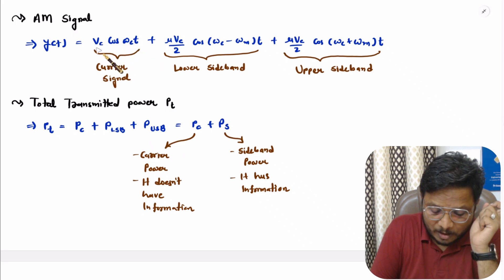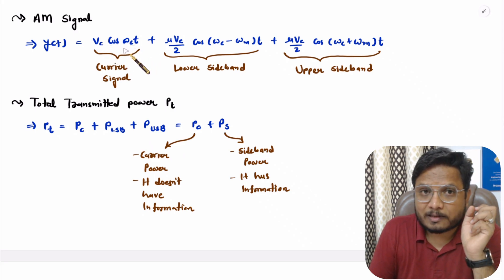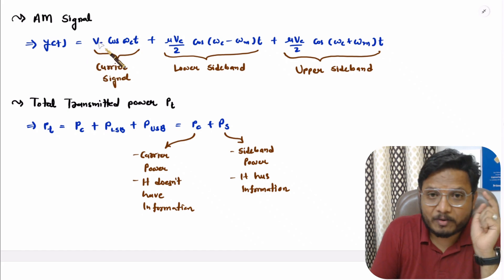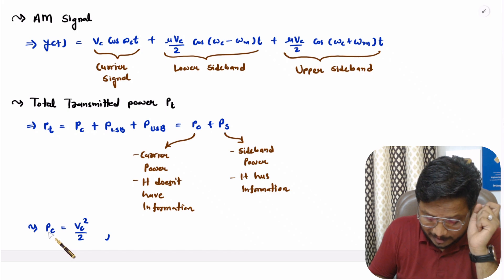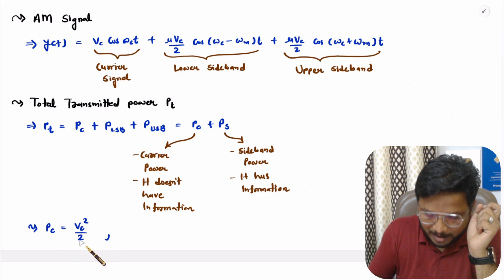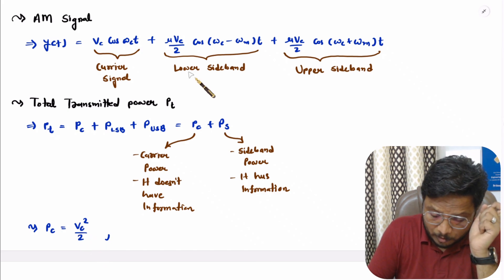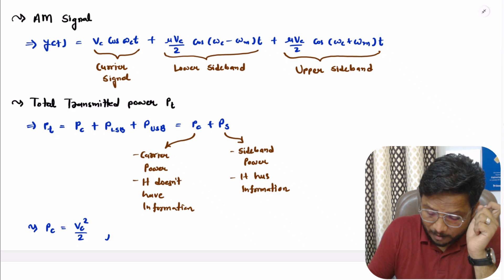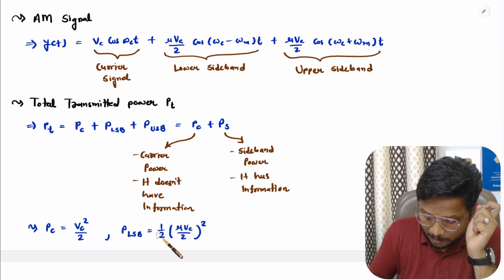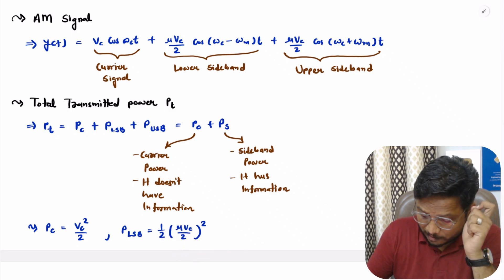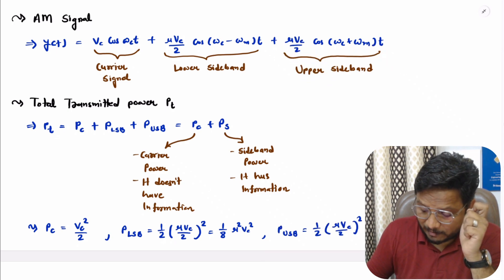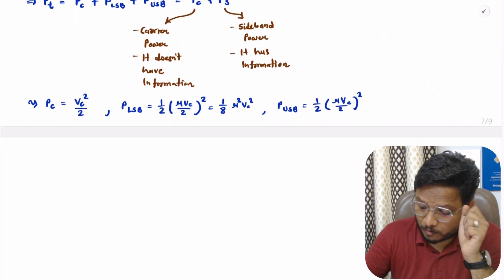The carrier signal is VC cos(ωCt). Power is the square of the amplitude divided by 2 for a sine or cosine signal. So PC = VC²/2. For the lower sideband, PLSB = (1/2) × (μVC/2)² = (1/8)μ²VC². Similarly, PUSB = (1/2) × (μVC/2)² = (1/8)μ²VC².